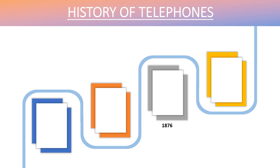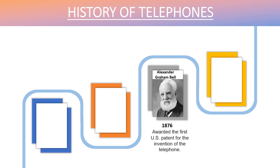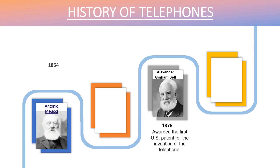It all began in 1876 when Alexander Graham Bell was awarded the first US patent for the invention of the telephone. This award was a bit controversial, as there were some other people who had contributed to starting the phone at that time. Some years before that, guys like Antonio Giuseppe Meucci, who is from Italy, constructed a telephone-like device which never came to surface because it had some shortcomings.